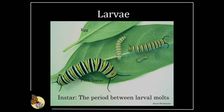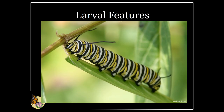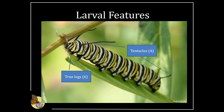Each new instar grows and expands until the outer skin splits. The head capsule falls off, and the newly emerged larvae is able to crawl out of its skin. Monarch larvae are eating machines, growing 2,000 times their original mass. Larvae have four tentacles — two near the head and two at the rear — which are sensory organs that aid in navigation. As an insect, monarch larvae have six true legs, which are part of their thorax, or midsection. They also have ten prolegs attached to their abdomen, which serve a similar function to true legs but are not retained in adulthood.